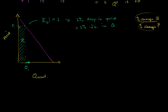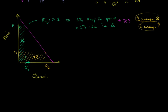So total revenue will increase. When price drops, a 1% drop in price and a larger than 1% increase in quantity means that total revenue will go up. Now, if we go down to this part of the curve, let's call that P2, and let's call that quantity 2. This area right over here would be total revenue 2, and let's call that total revenue 1 over there.